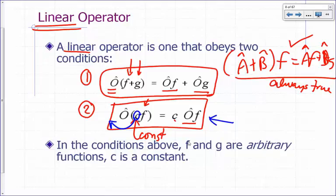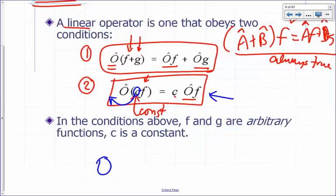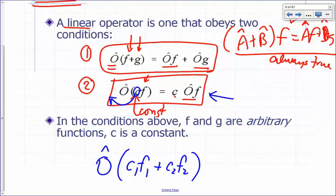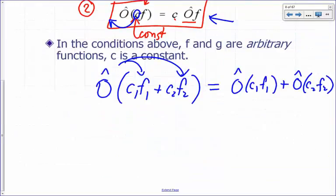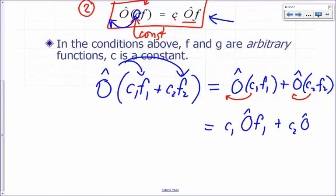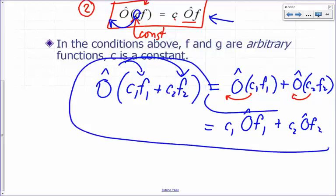In fact, you can combine these expressions. In some textbooks, a linear operator is defined as: operator O is a linear operator if you operate it on C1·F1 plus C2·F2, where C1 and C2 are constants and F1 and F2 are functions, and you can distribute — so that's O(C1·F1) plus O(C2·F2), which satisfies condition 1. And if condition 2 is also satisfied, you can pull out the constants to get C1·O(F1) plus C2·O(F2).